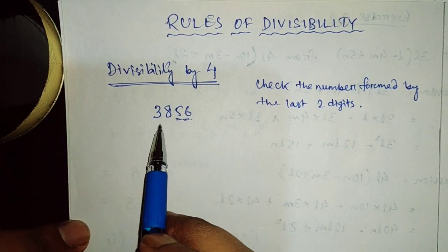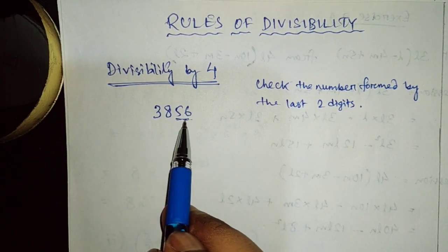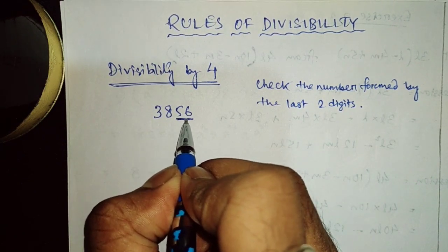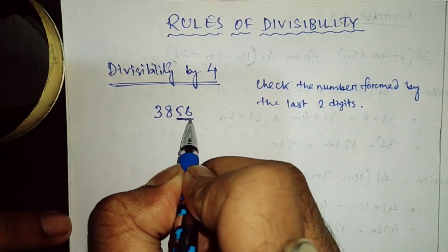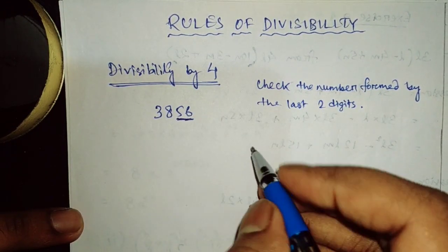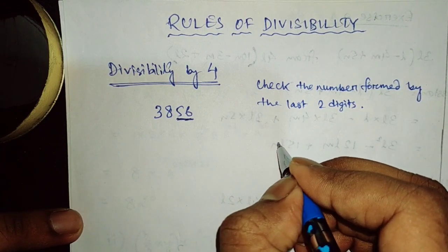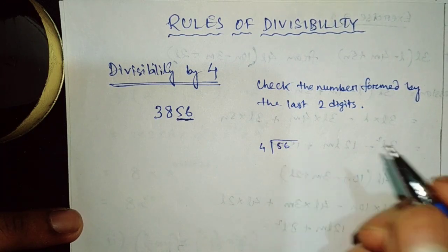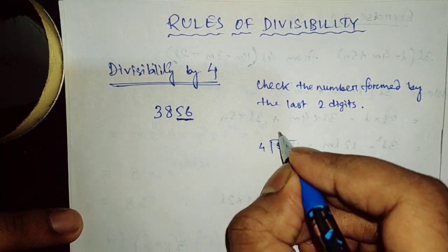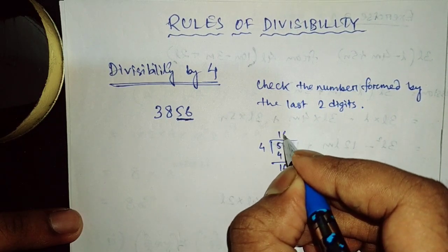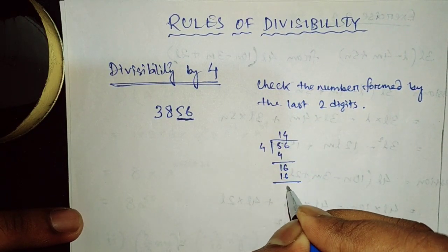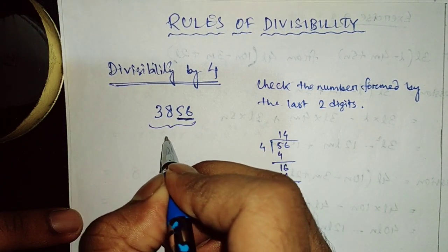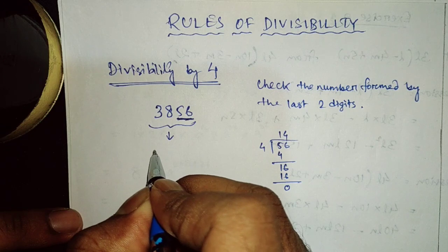So in this number 3856, the number formed by the last two digits is 56. We have to check whether 56 is divisible by 4, not the whole number. So we divide 56 by 4: 4 times 14 is 56, remainder is 0. That means this whole number is divisible by 4.